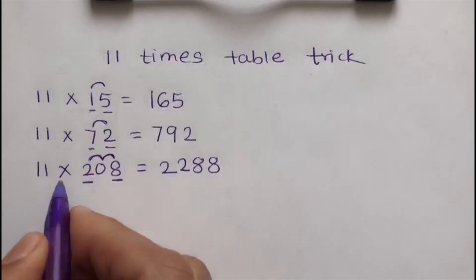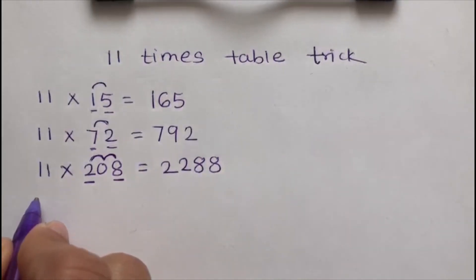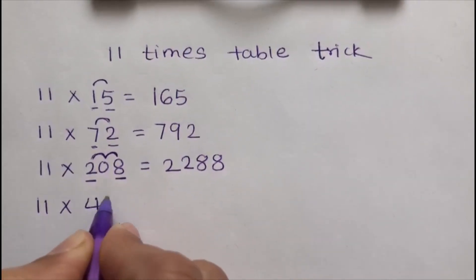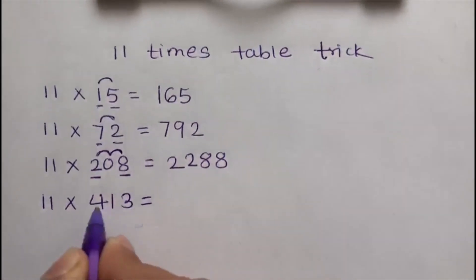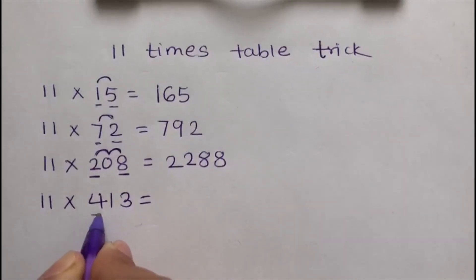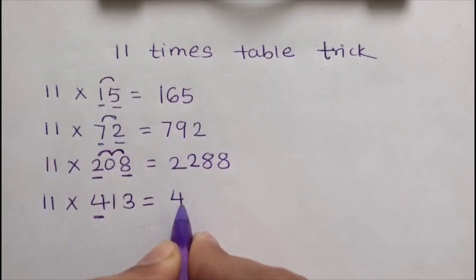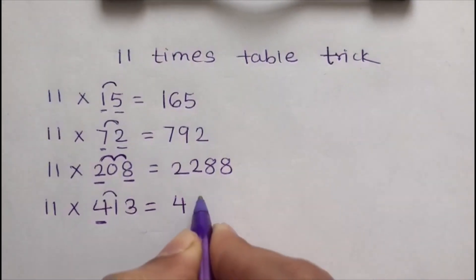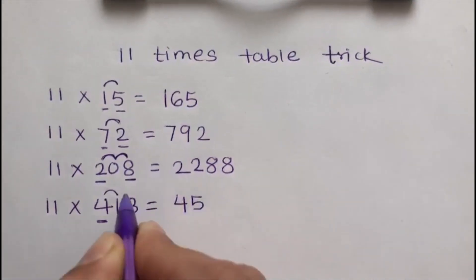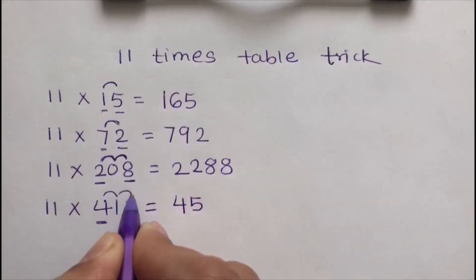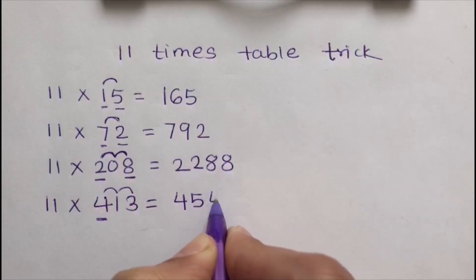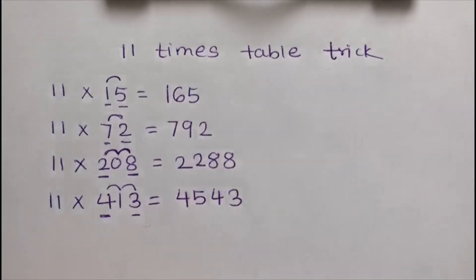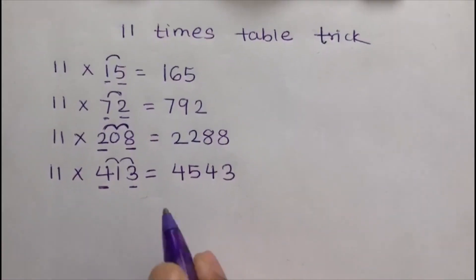Next: 11 times 430. The first digit is 4, so I write 4 here. Then add 4 and 3, which gives 7. Then add 3 and 0, which gives 3. Write the last digit, which is 0. So 11 times 430 equals 4730.